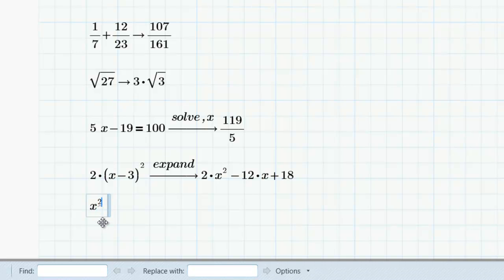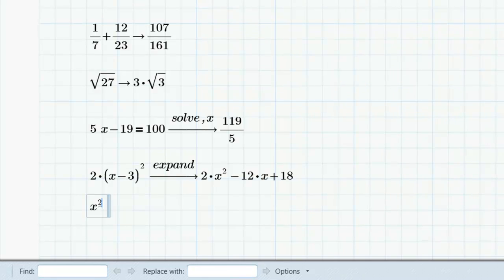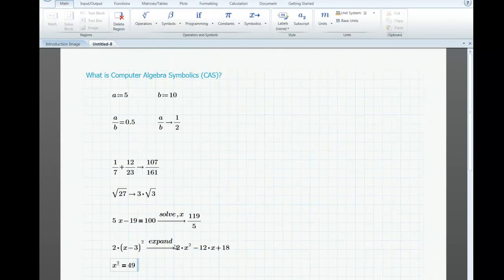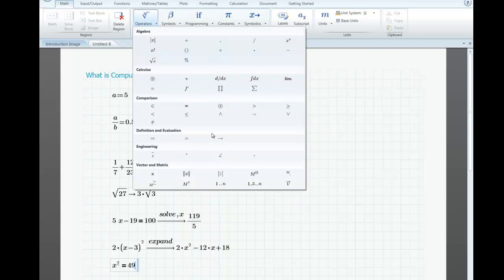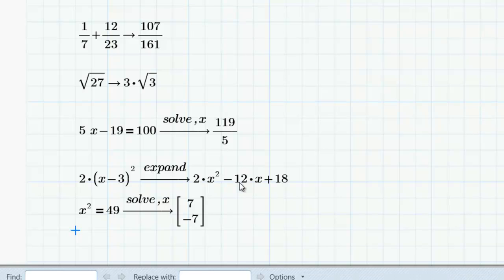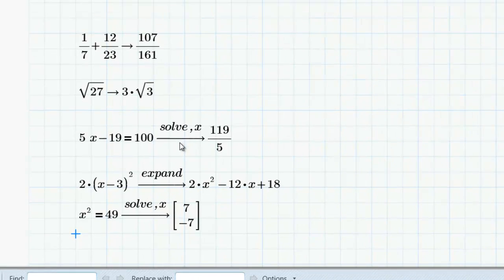Finally, I can take a value like x squared and set that equal to 49, and again, I can evaluate symbolically and solve for x, and MathCAD will give me both results, 7 and negative 7. Note that the first two here are arithmetic expressions, and the final three demonstrate how a keyword can be used to request a specific algebraic procedure.